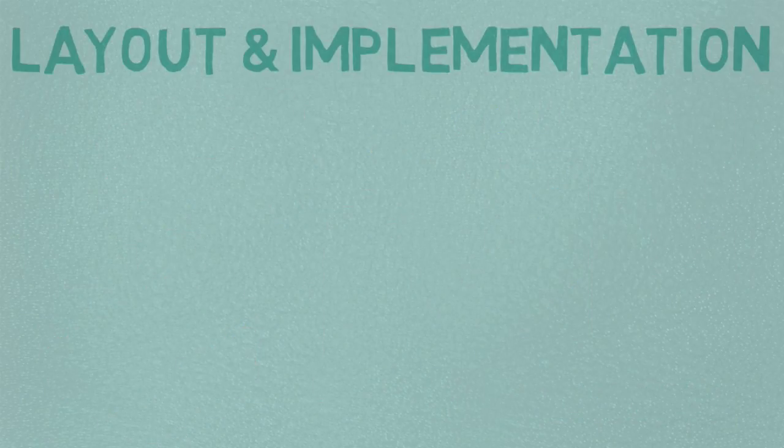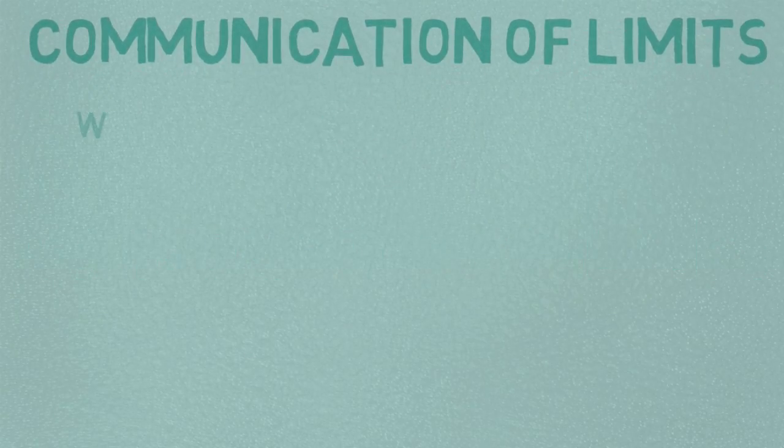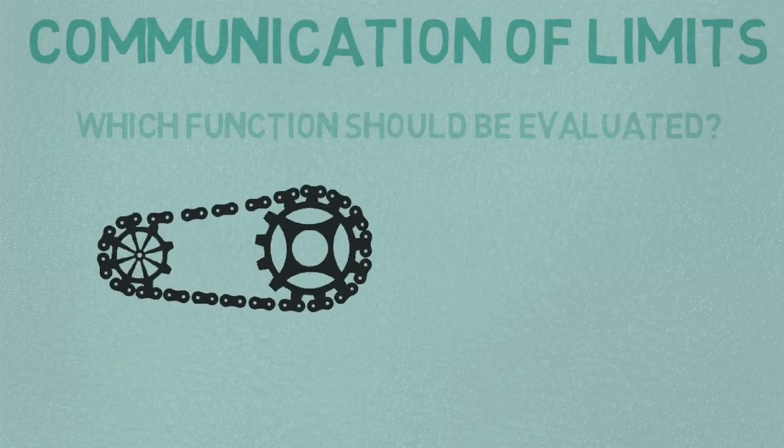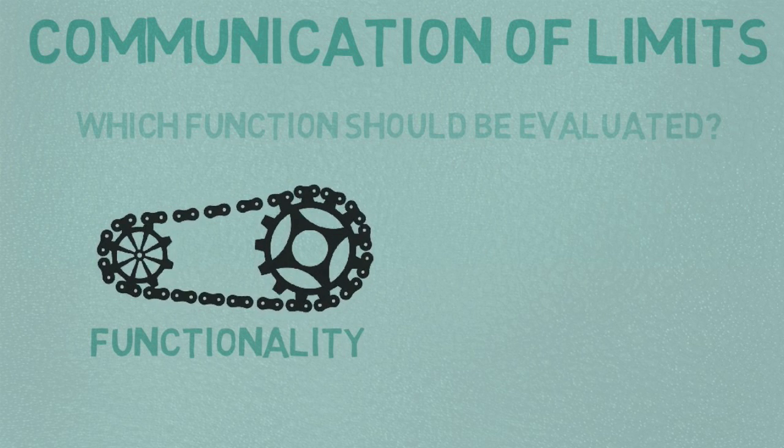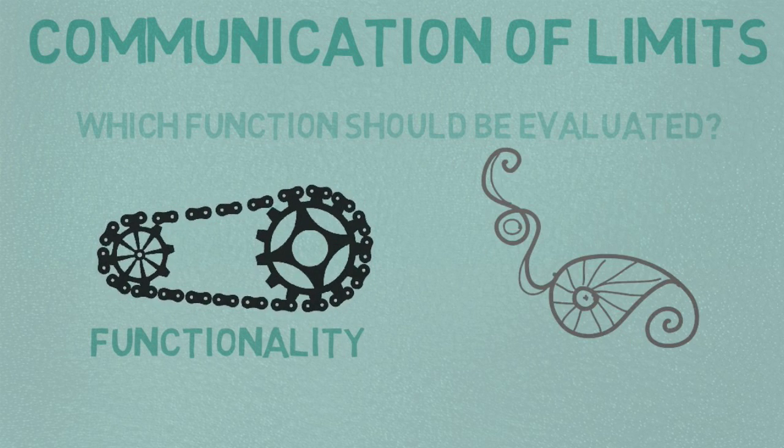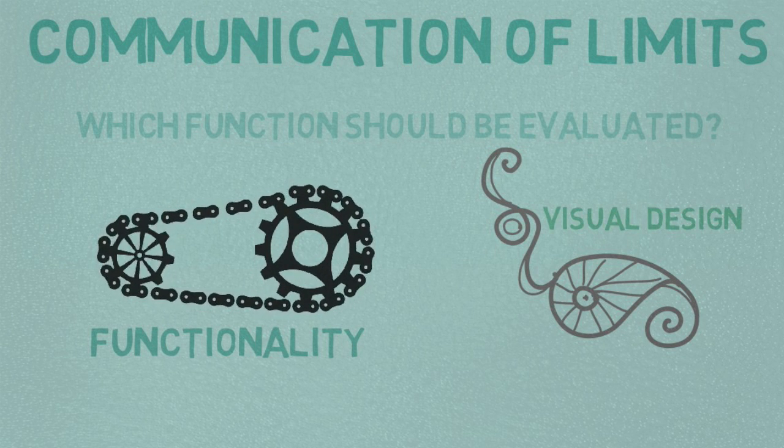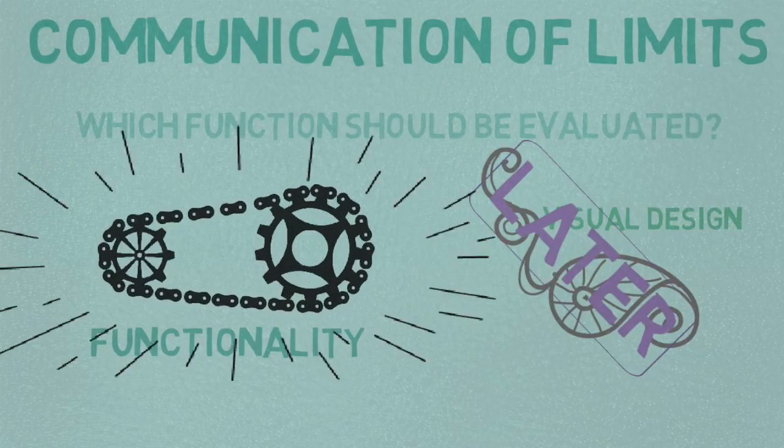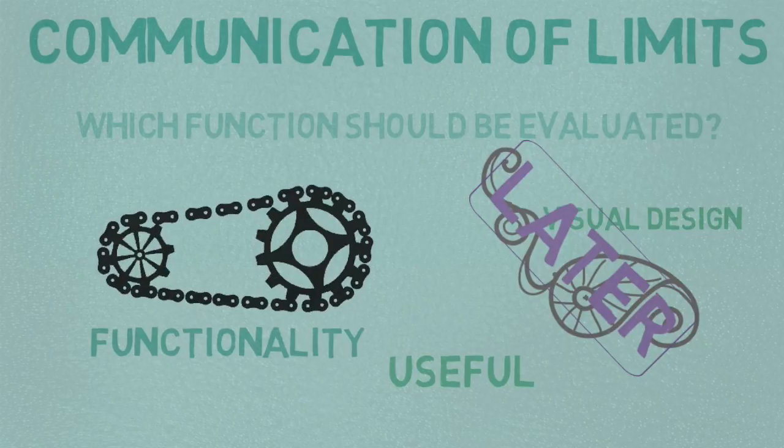How can the limits of the prototype be communicated? You have to make the stakeholder clear what the function they should evaluate is. For example, if the sketch of the product concept just describes the functionalities of the product but not its visual appearance, you have to point out at which aspect the stakeholder should focus on.